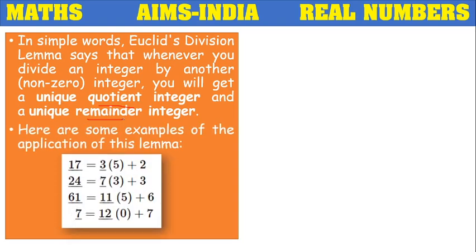Some more examples: 17 is the dividend and 3 is the divisor — dividing 17 by 3 gives quotient 5 and remainder 2. For 24 divided by 7, the quotient is 3 (since 7×3 = 21) and the remainder is 3. For 61 divided by 11, the quotient is 5 and the remainder is 6. For 7 divided by 12 — though 7 is less than 12, we can divide: the quotient is 0 and the remainder is 7.